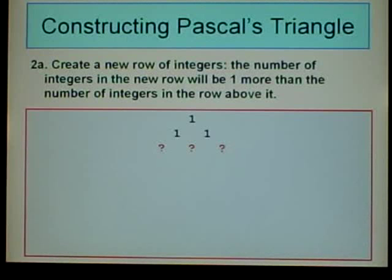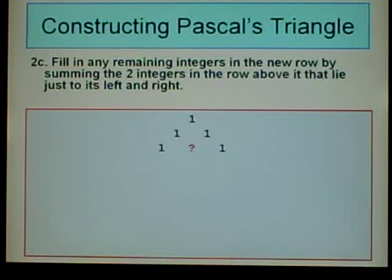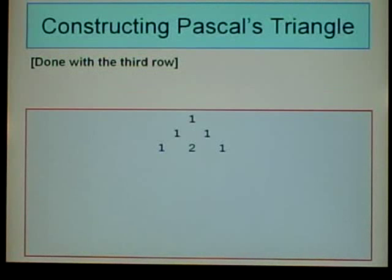We repeat step 2A to create another row. The row above has two integers, so this row will have three integers. We assign 1 to the first and last positions, leaving one unknown in the middle. To fill it in, we sum the two numbers in the row above just to its left and right: 1 plus 1 equals 2. So 2 goes in that slot. We're done with the third row.